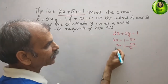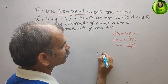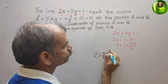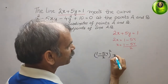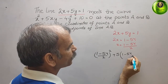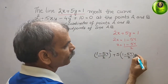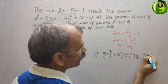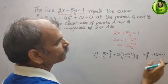Substituting into the curve equation, we get x² = ((1 - 5y) / 2)², and for the 5xy term we get 5 × ((1 - 5y) / 2) × y, then minus 4y² plus 10 equals 0.